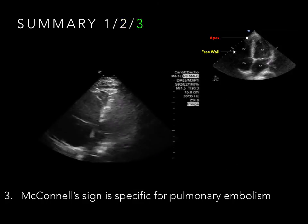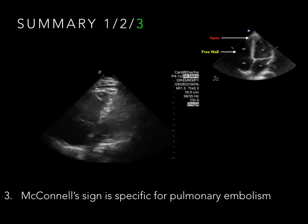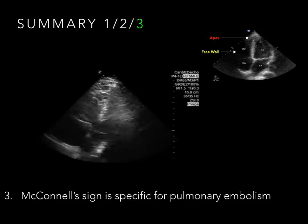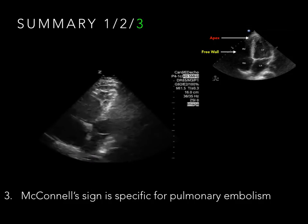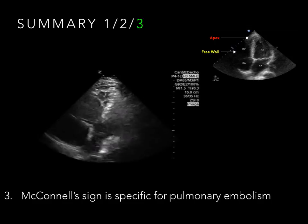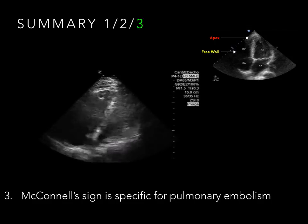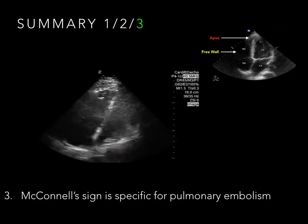Take-home point number three: McConnell's sign, on the other hand, is specific for pulmonary embolism. Finally, while bedside echo may reveal definitive signs of pulmonary embolism as described, diagnostic accuracy is increased with combination ultrasonographic evaluation of the lungs, lower extremities, and the IVC. Future podcasts will describe how ultrasound may be used to evaluate these other structures.